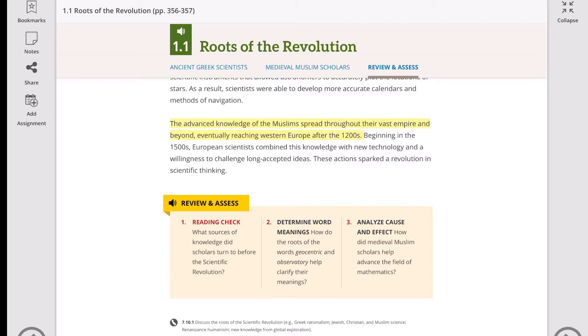Number one, reading check: What sources of knowledge did scholars turn to before the scientific revolution? And number two, determine word meanings: How do the roots of the words geocentric and observatory help clarify their meanings? What's the meaning of the word geo and observatory? What's the root word for that? Analyze cause and effect for number three: How did medieval Muslim scholars help advance the field of mathematics?